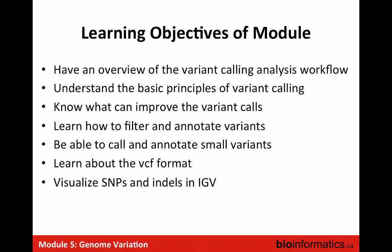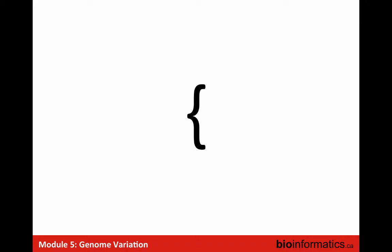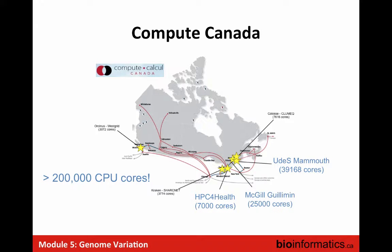Before starting, I wanted to add a parenthesis: even though for this workshop we're using Amazon cloud, there are other resources - especially if you're Canadian. You have access to large clusters that are part of Compute Canada. At McGill we have a cluster with 25,000 cores; Sherbrooke is another one; there's HPC for Health in Toronto. No matter where you are in Canada you can request access. The types of commands and tools you use are really the same process.